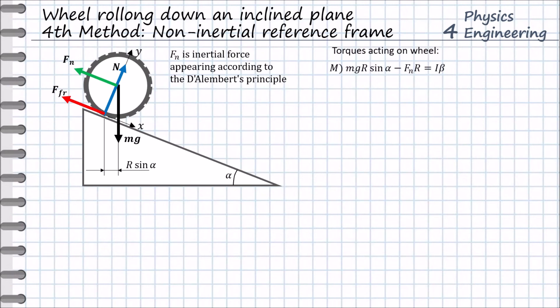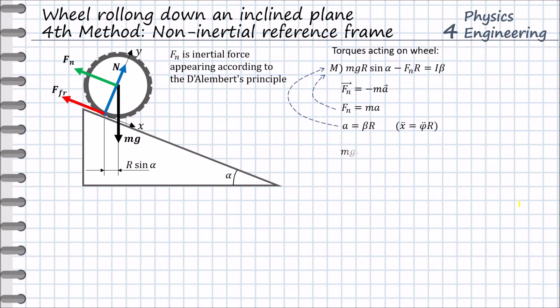With the inertial force we have two torques acting on the wheel about our coordinate system: the torque from gravity and the torque Fn·R from the inertial force. The wheel is spinning in the new coordinate system, so the sum of these two torques equals the moment of inertia times the angular acceleration. According to D'Alembert's principle, Fn equals the mass times the linear acceleration of the non-inertial frame with a negative sign, meaning Fn = Ma in absolute value. Adding the relation between linear and angular acceleration and substituting both into the torque equation, we obtain the linear acceleration of the wheel.